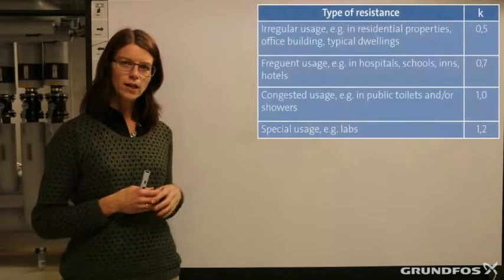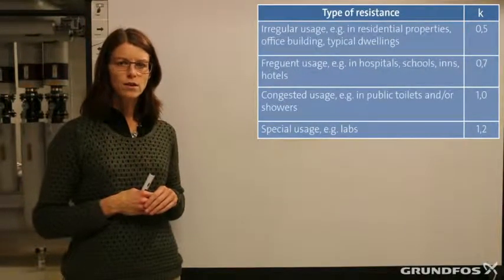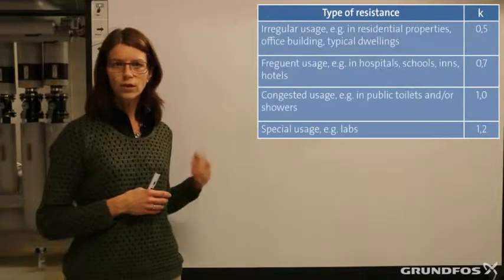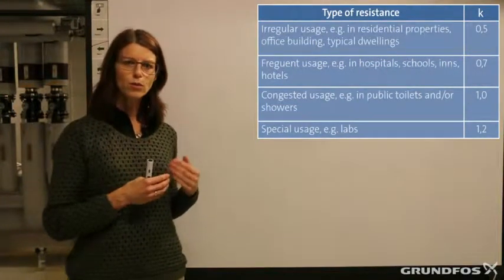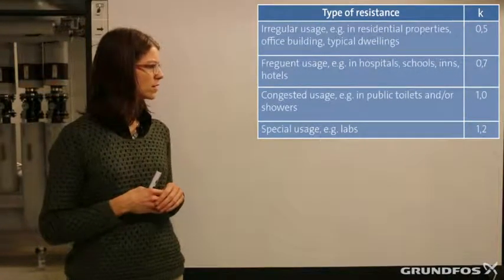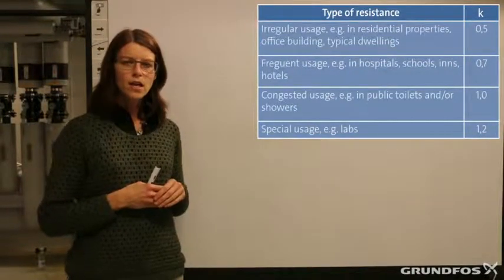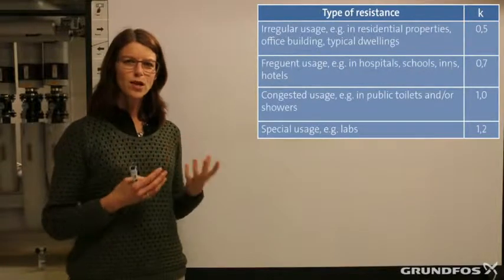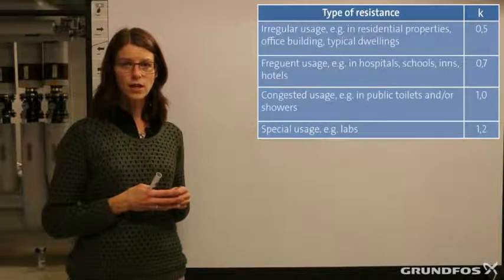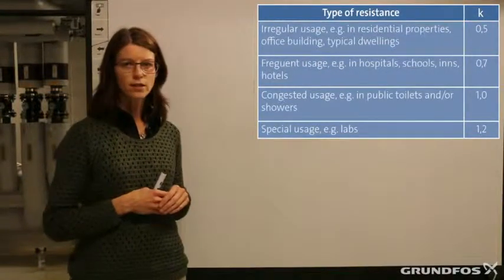When calculating the wastewater flow rate, a K factor must be chosen. The K factor is the frequency factor and it shows the simultaneous use of the different discharge units in the building or in the particular system. In the table shown here you can see different K factors. You will have a K factor of 0.5 for dwellings, as you have a controlled number of people and the frequency of use is lower. Hotels or hospitals use 0.7. For public buildings you will have a frequency factor of 1.0, where you have a more uncontrolled number of people, for example a sports arena. And for laboratories you will have a frequency factor of 1.2.